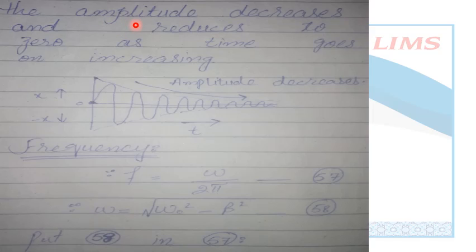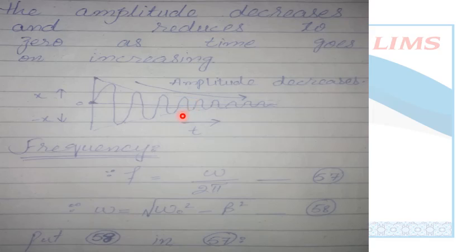The amplitude decreases and reduces to zero as time increases. If I represent this graphically: amplitude is on the positive and negative vertical axis, time is on the horizontal axis. As time increases, the amplitude decreases continuously until it reaches zero — the graph shows amplitude diminishing to zero.